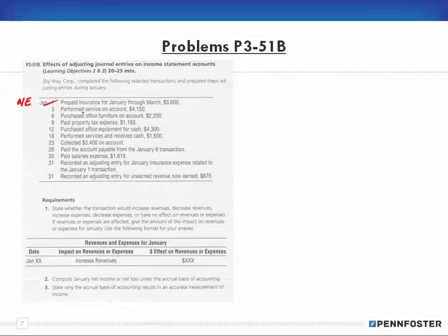January 3rd: performed services on account. The entry is debit accounts receivable and credit service revenue. Cash is not affected; accounts receivable goes up. So for the 3rd, we increase revenue by $41.50, because we're performing services on account.